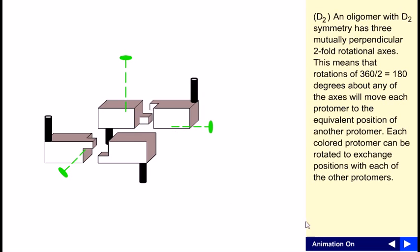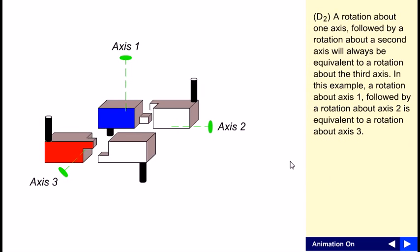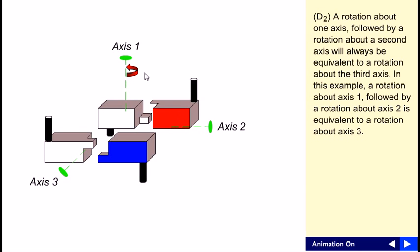Now in D2, a rotation about one axis followed by rotation about a second axis will always be equivalent to a rotation about the third axis. In this example, a rotation about axis 1 followed by rotation about axis 2 is equivalent to rotation about axis 3. This axis 3 is a result of the rotational impulse of axis 1 and axis 2 both.